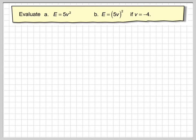Right, in this video we're going to look at squaring with brackets and squaring without brackets. So we've got to evaluate A: E = 5V squared, and B: E = (5V) all squared, if V is equal to minus 4. We're going to show that these are not actually the same thing.